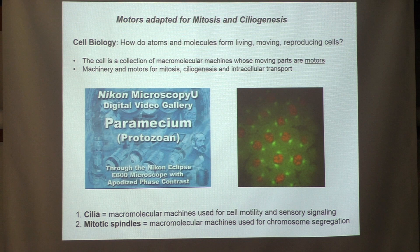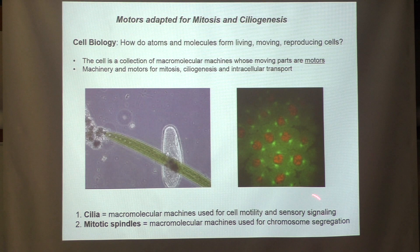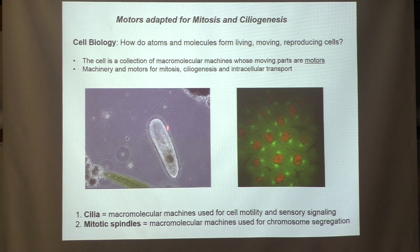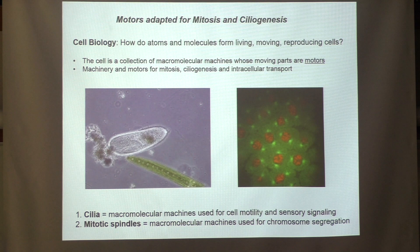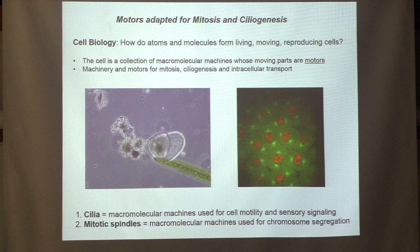Cilia are macromolecular machines used for cell motility and sensory signaling. This beautiful image of a paramecium shows beating cilia on the cell surface, which it uses to swim through pond water. We now appreciate that cilia are not only motile organelles — they also detect chemicals in the environment, allowing cells to navigate towards nutrients and away from toxins.